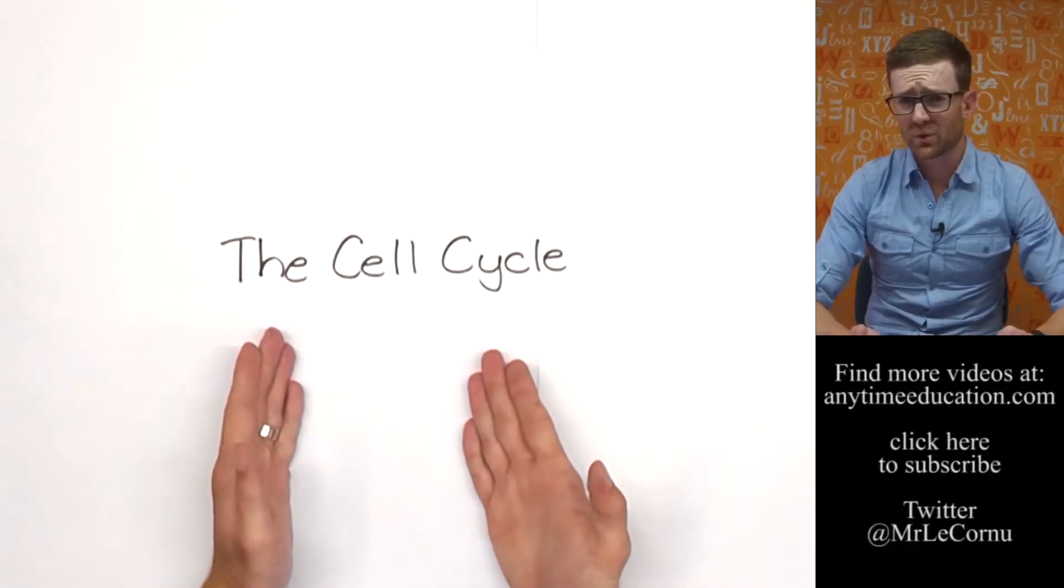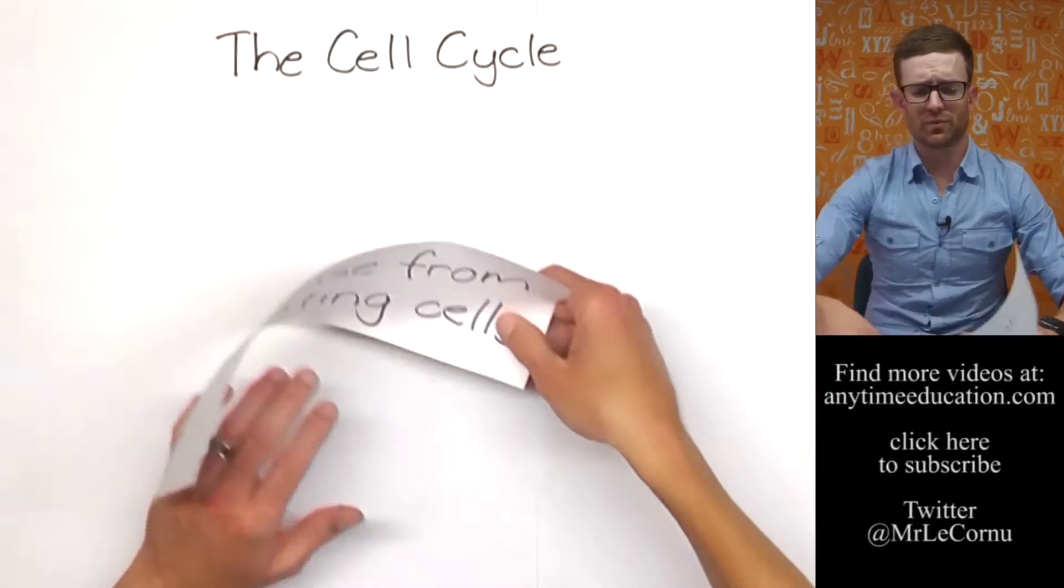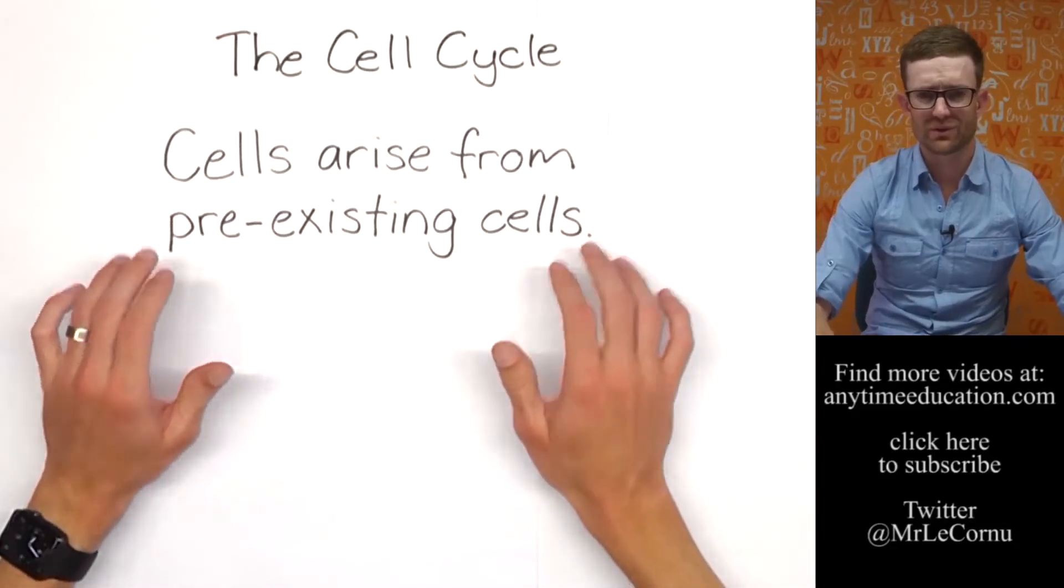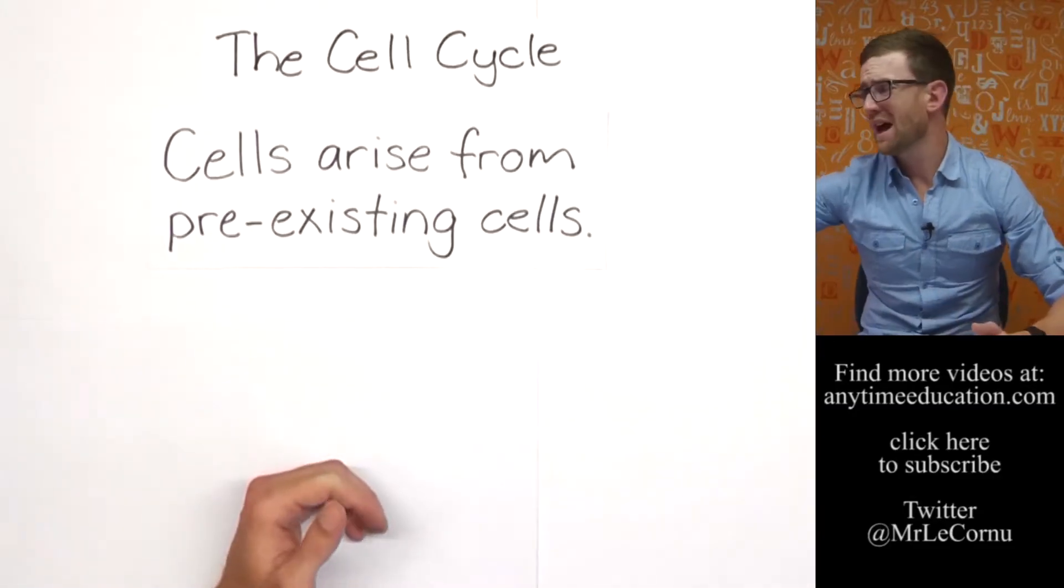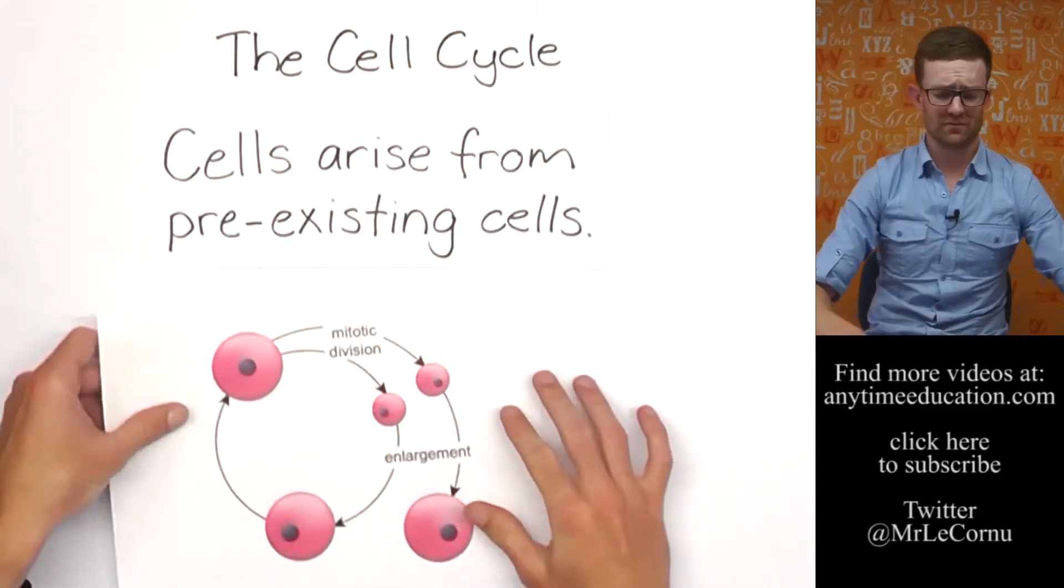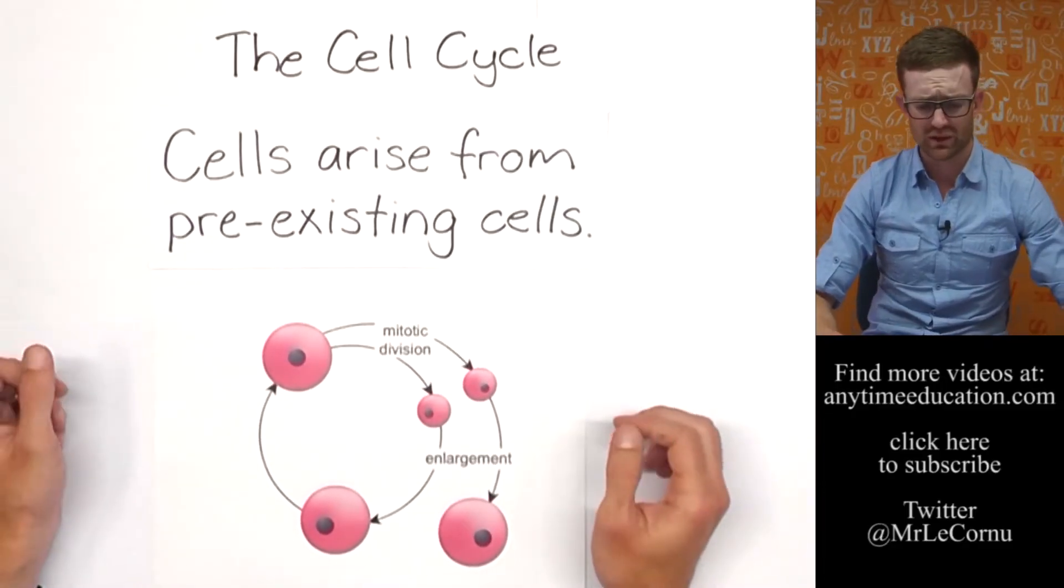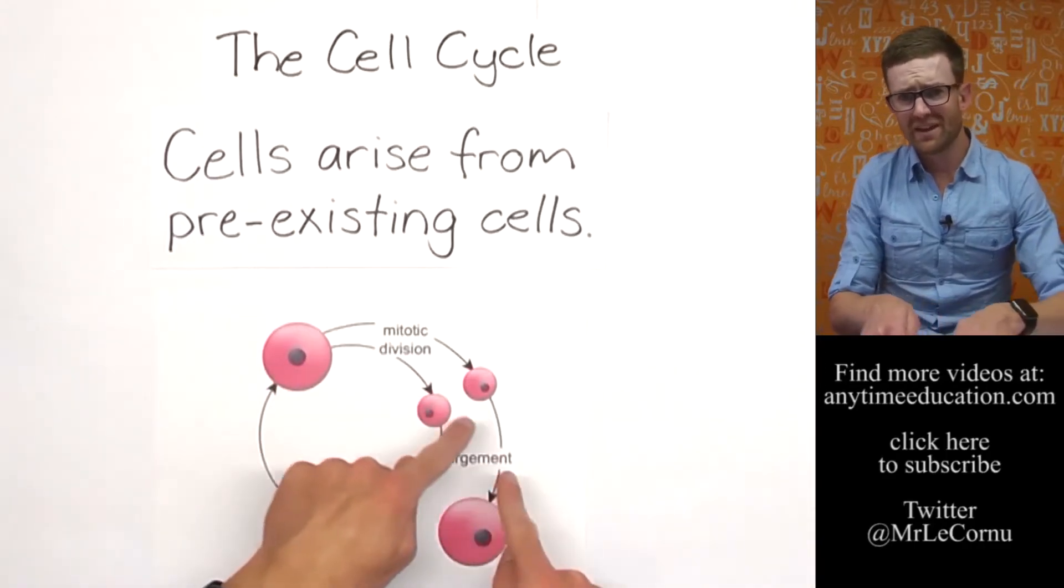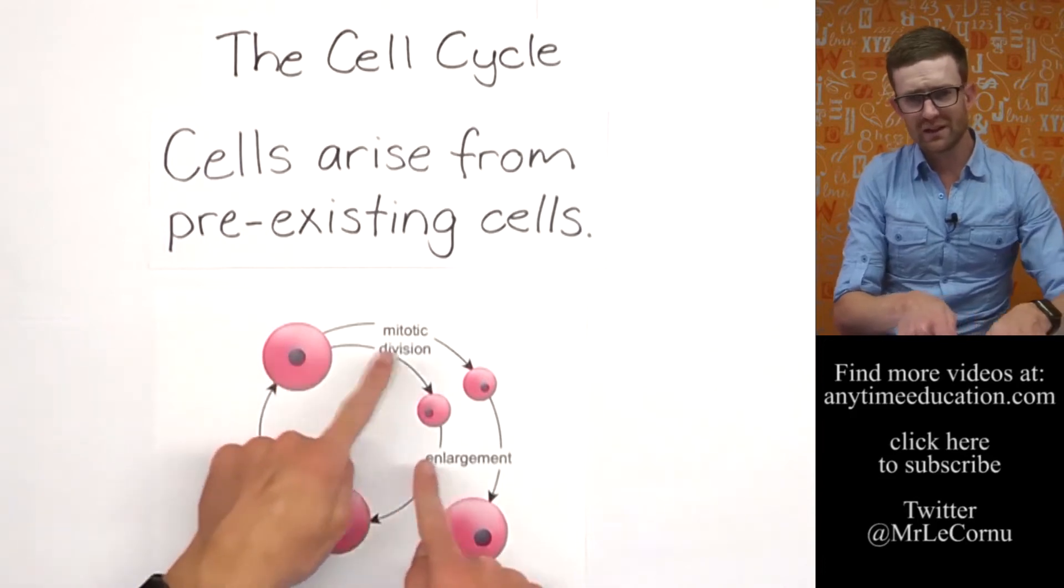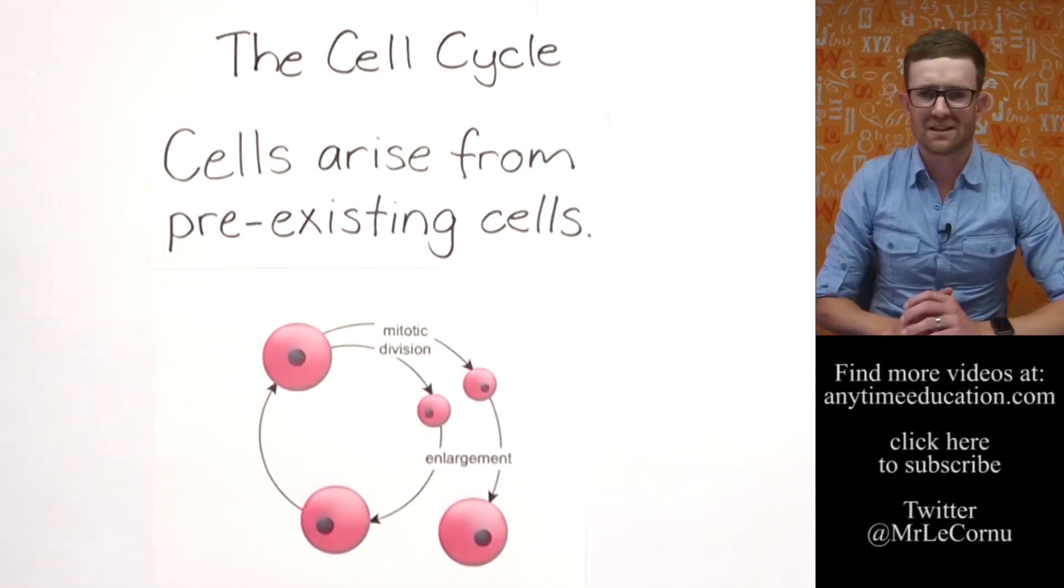Okay, so what's the cell cycle? Well, remember cells arise from pre-existing cells. Every cell has come from another cell. What happens is cells divide. Here's a very basic overview of a cell cycle - it's an alternation between the cell growing and then dividing, growing, dividing, growing, dividing. That's the real basics.